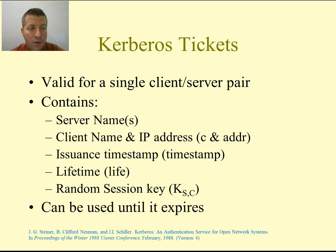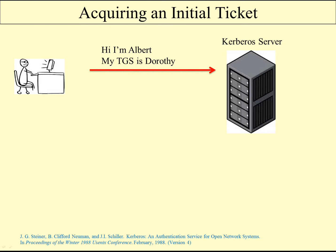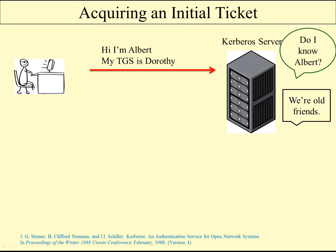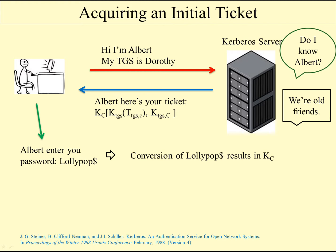This ticket is generated by the Kerberos server. When acquiring an initial ticket, we send a request to the Kerberos server. The Kerberos server checks if it knows the person, and if so, sends the ticket back with the information we saw. It then prompts us to enter our password. We enter our password, which is used along with the returned ticket to gain access to the server we want to connect to.